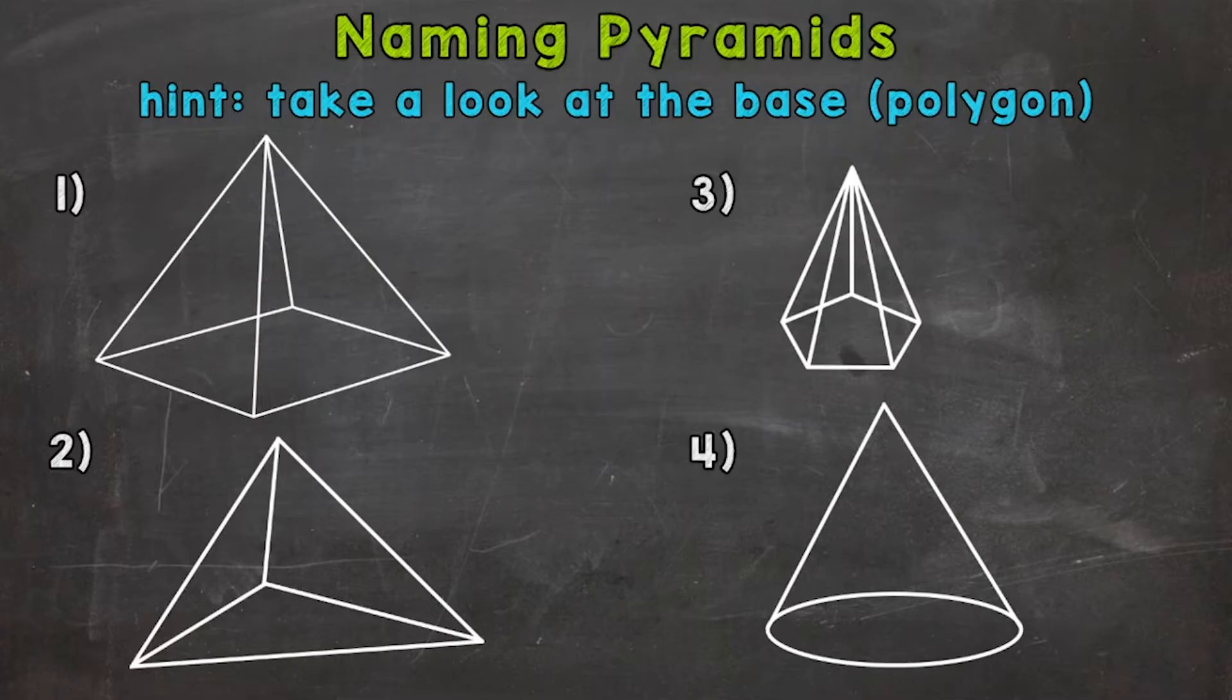by talking about what is a pyramid. A pyramid is a 3D figure made of one base, which can be any polygon. This polygon base will give a pyramid its specific name. A pyramid also has triangular faces or sides that meet at a point called the apex. Let's get into naming some pyramids.